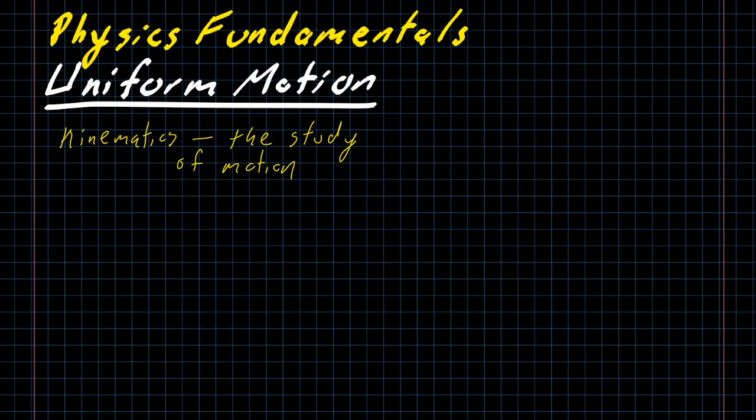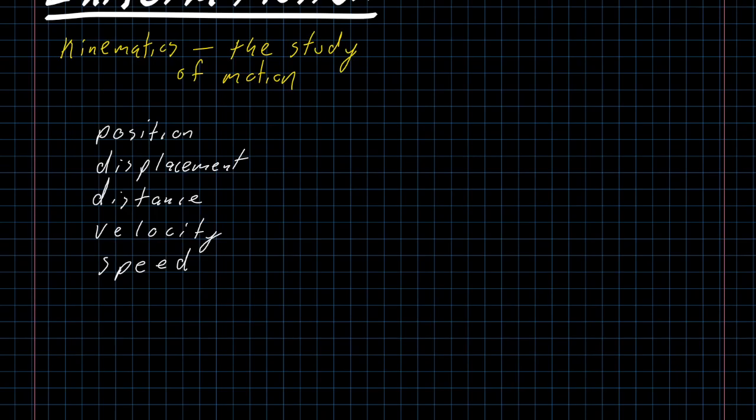If I get my head out of the way, there are five words that I want you to know: Position, Displacement, Distance, Velocity, and Speed. For the sake of completeness, I should also include time on this list, although I don't think that anyone has any misconceptions about what we mean by time.